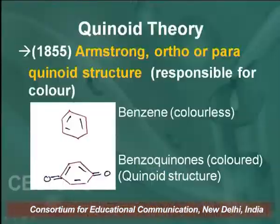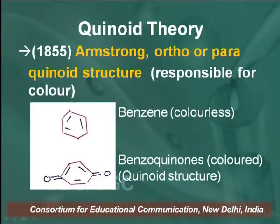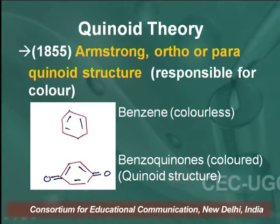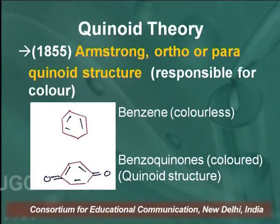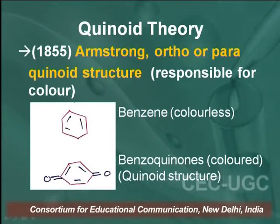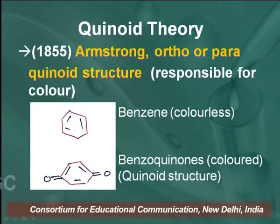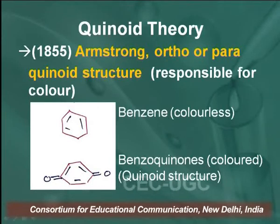Another very important theory is the quinoid theory, also called Armstrong theory. Armstrong proposed this theory in 1855. According to this theory, when any organic compound or dye contains an ortho- or para-quinoid structure, that quinoid structure is responsible for the colour of that compound or dye.